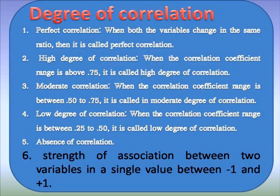Regarding degrees of correlation: perfect correlation occurs when both variables change in the same ratio. High degree of correlation is when the coefficient value is 0.75 or above. Moderate correlation is between 0.50 and 0.75. Low degree is between 0.25 and 0.50, and absence of correlation is below 0.25. The range of the correlation coefficient is from minus one to plus one.